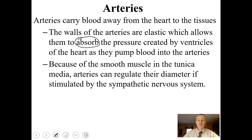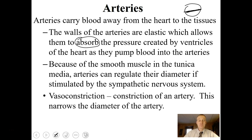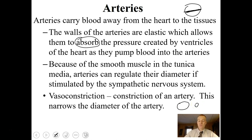Because arteries have smooth muscle tissue in the tunica media, they can regulate their diameter. Vasoconstriction is the constriction of an artery so that it narrows. A narrow artery forces blood through at greater pressure and can send it in a further direction. Vasodilation is the relaxation of the smooth muscle tissue, going back to a larger diameter, which decreases the pressure exerted on the blood.